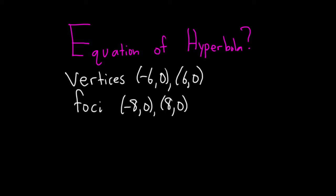Hello, in this problem we're going to find the equation of a hyperbola. We're told that the vertices are (-6, 0) and (6, 0), and the foci are (-8, 0) and (8, 0).